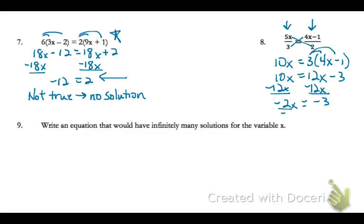Divide both sides by negative 2, because we're just undoing the math that's being done to the variable. So our answer is positive 3 halves.